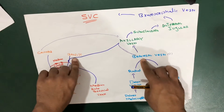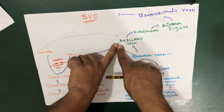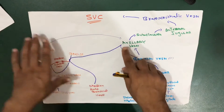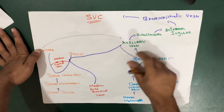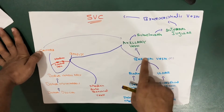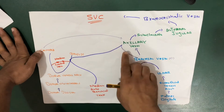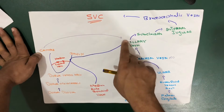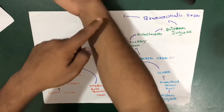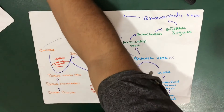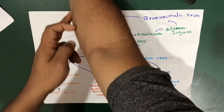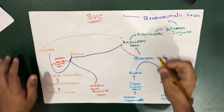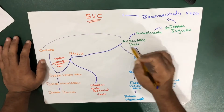After receiving these tributaries, the basilic vein goes upward and joins with the brachial vein. When basilic and brachial veins join together, they form the axillary vein. The cephalic vein comes from the lateral side and also drains into the axillary vein. So the basilic vein and the brachial vein — which is a deep vein — combine together to form the axillary vein.